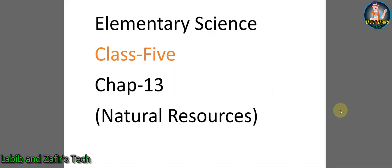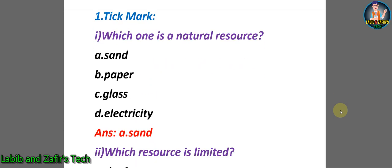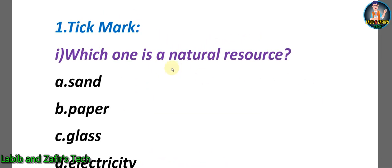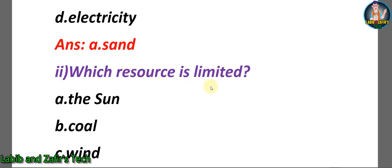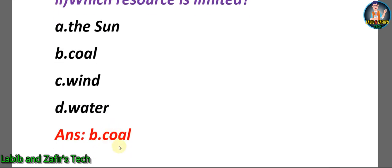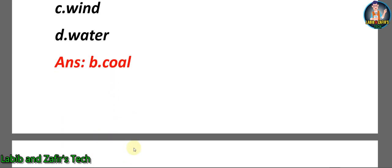Elementary Science Class 5, Chapter 13: Natural Resources. MCQ number one: Which one is a natural resource? A) Sand, B) Paper, C) Glass, D) Electricity. The answer is A) Sand. Number two: Which resource is limited? A) The Sun, B) Coal, C) Wind, D) Water. The answer is B) Coal.